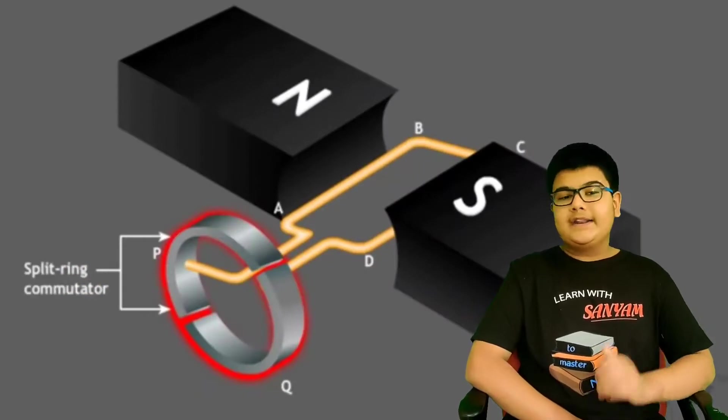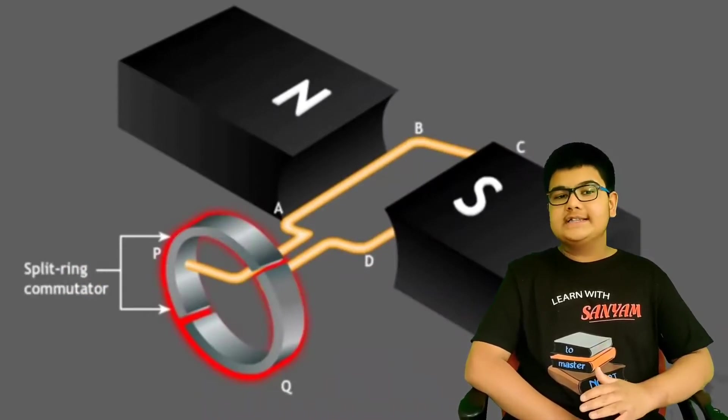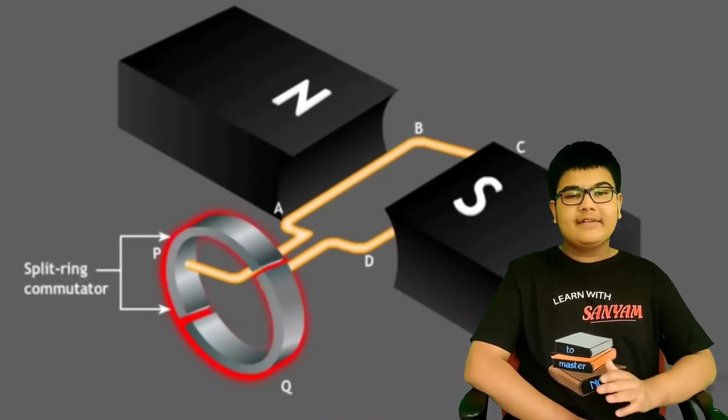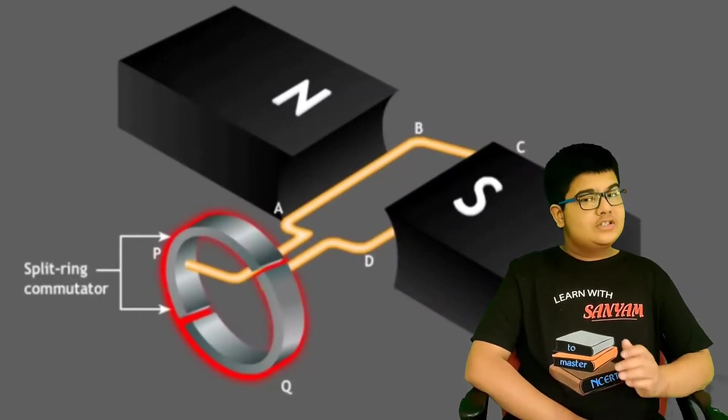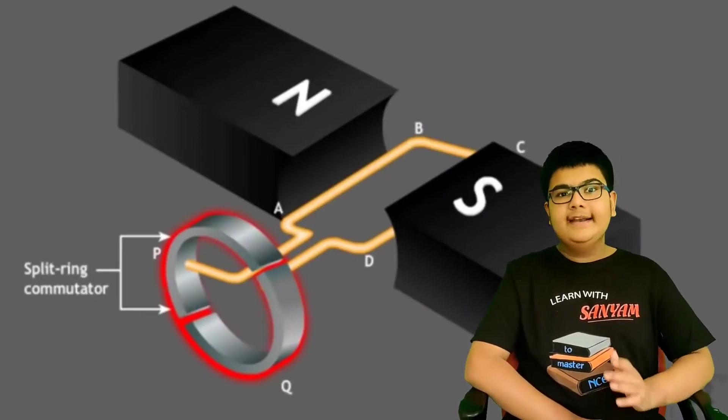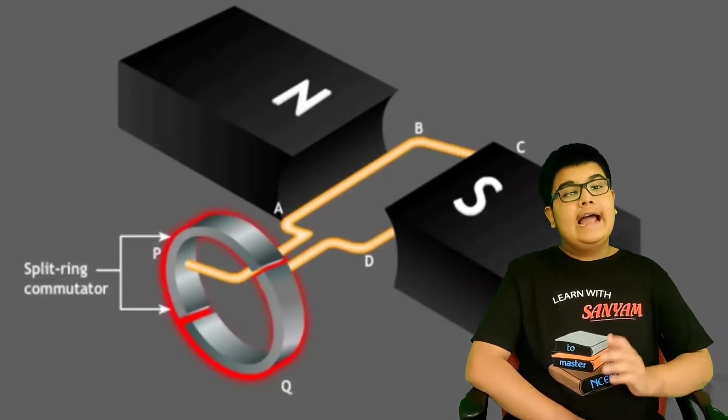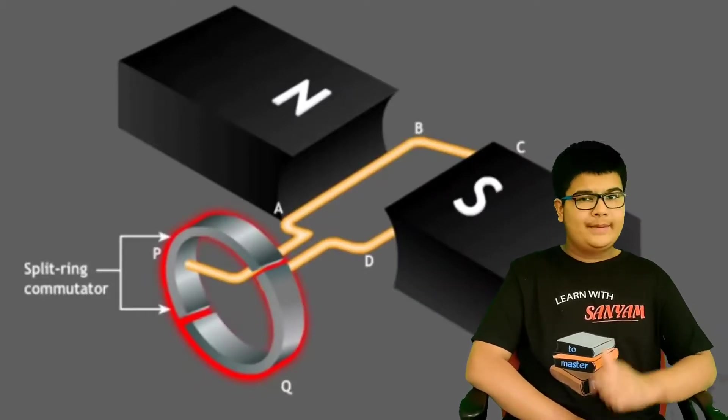Third, split rings. The ends of coils are connected to split rings P and Q. Split rings is nothing but take a ring and split it into two halves. And split rings are movable.